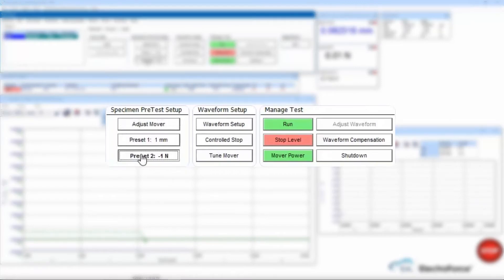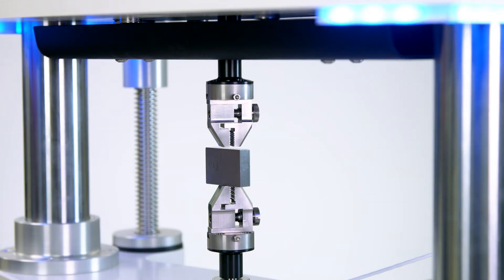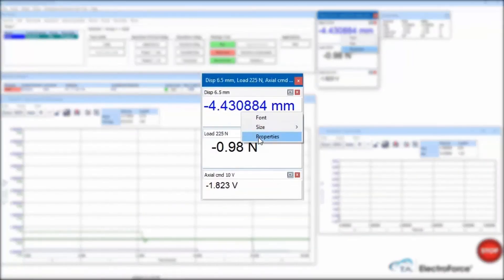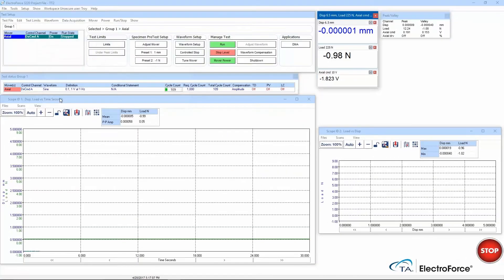I then use the preset feature in WinTest to move the grip to make light contact with the gauge block. Once I'm in contact, I will tare my displacement channel to zero using the auto tare feature. This displacement channel is now configured for the corrected sample height feature.